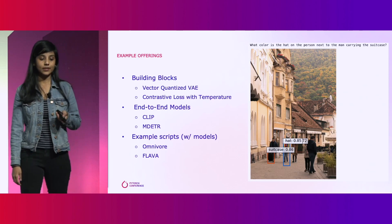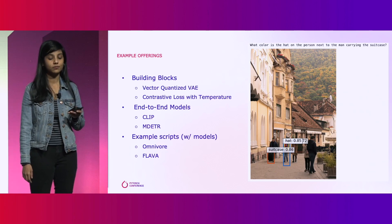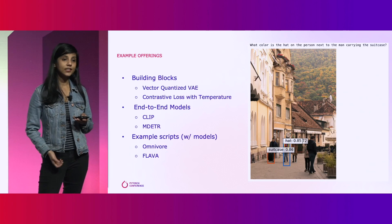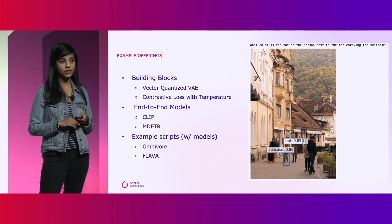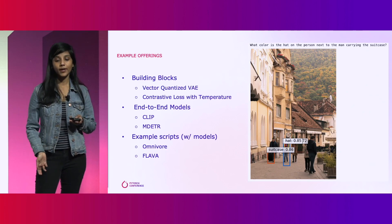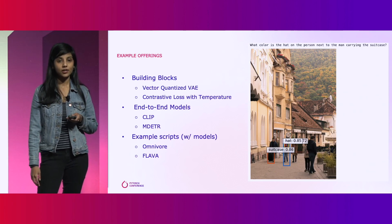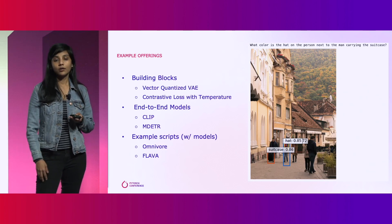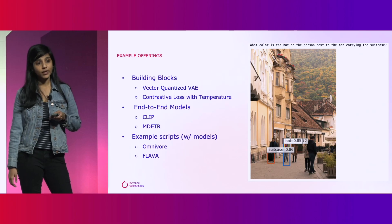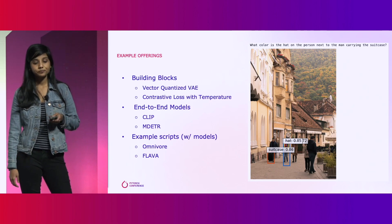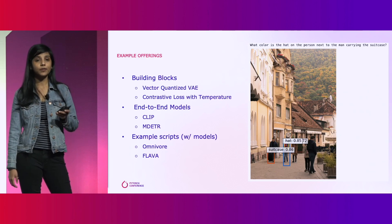To cover a few example offerings: for building blocks, we have a vector-quantized variational autoencoder (VQ-VAE), which helps in learning discrete latent representations for your data and forms the visual tokenization layer for many generative models today. There is also the cross-modal contrastive loss, which can be plugged into any use case and is used by several examples in our library — which brings me to CLIP, an end-to-end image-text model pre-trained using contrastive loss. We also have mDETR, a text extension of the popular object detection algorithm DETR. For example scripts, we added Omnivore pre-training, where a single visual encoder multitasks to learn image, video, and 3D representations. And finally, we also have another foundation multimodal model flavor, which I will talk about soon.